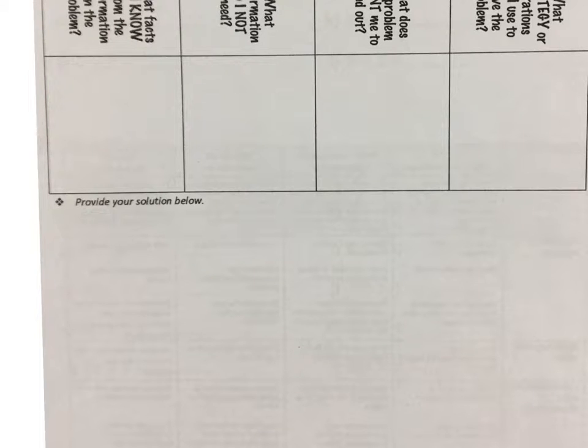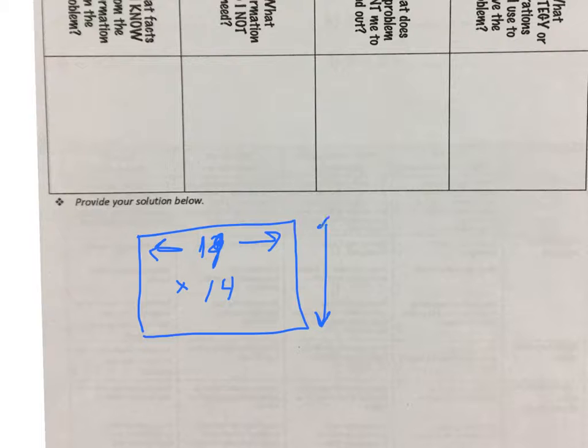Okay, there's a parking lot with 19 rows and 14 spots across in each row. So I'm thinking 14 times 19 because there's 14 across in each row and there's 19 of them.